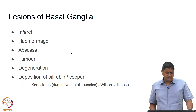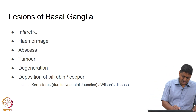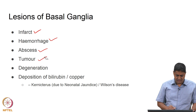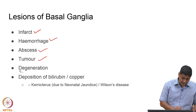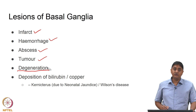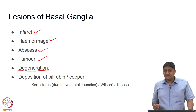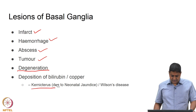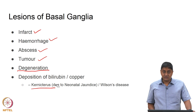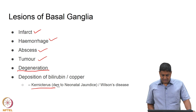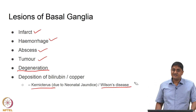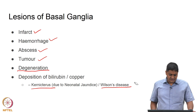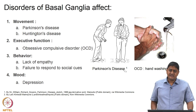Lesions of the basal ganglia happen due to multiple reasons. This may be due to infarct, hemorrhage, a tumour or abscess, and importantly, degeneration. In some cases, this may be due to the deposition of bilirubin, as in the case of kernicterus, which is caused due to neonatal jaundice, or copper deposition, in which case it is called Wilson's disease. So, there are different reasons why basal ganglia function may be compromised. An important reason, of course, is degeneration.